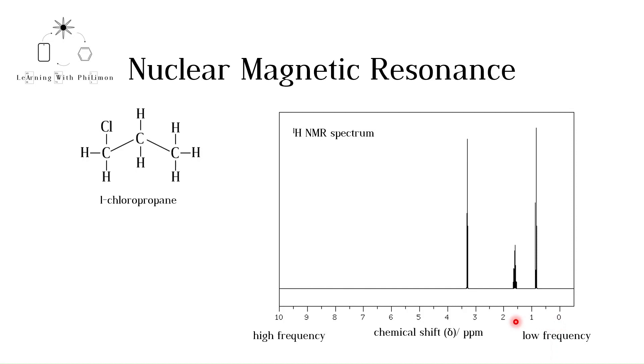For more on the relative nature of this scale, please watch the higher level video. In our NMR spectrum, we see three peaks. The peak at around 3.3 ppm corresponds to the hydrogens bonded to the carbon that is also bonded to a chlorine atom.